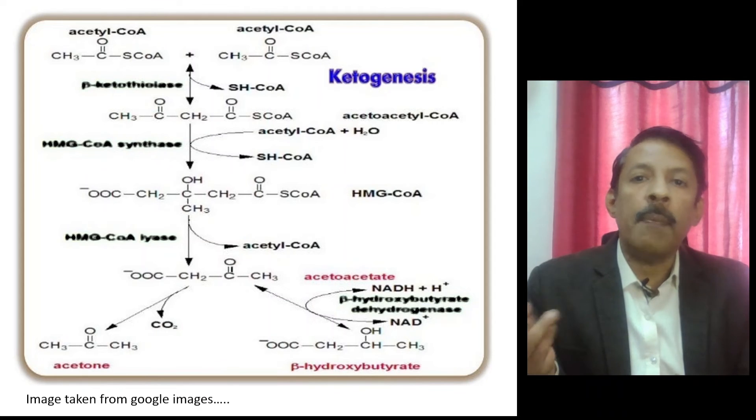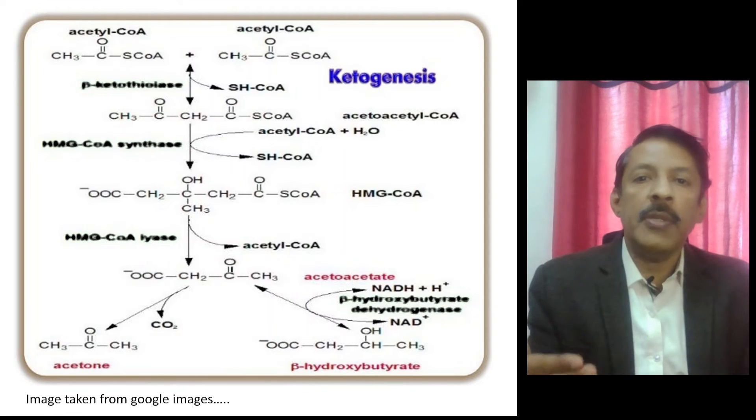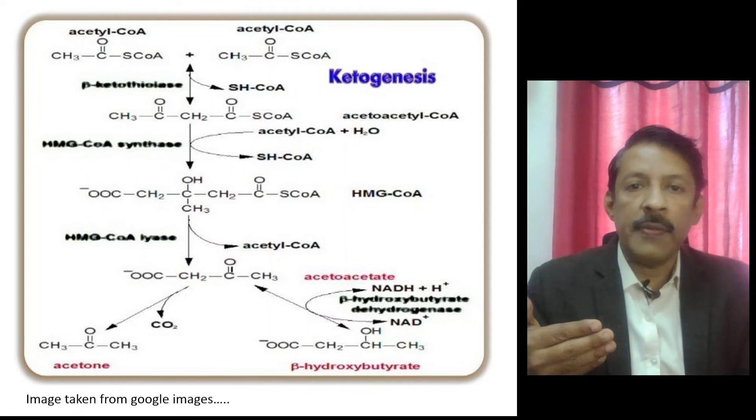The excess acetyl coenzyme A combines to form acetoacetyl coenzyme A, which goes on to form HMG coenzyme A. HMG coenzyme A is broken down to acetoacetate with the help of the enzyme HMG coenzyme A lyase.